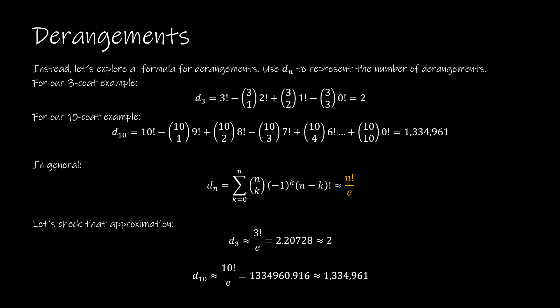So what we can do instead is explore a formula for derangements. We looked at D3, and derangement means nothing's in its right place or there's no pairing. So D3, we had three factorial, three choose one, two factorial, three choose two, one factorial, and so forth. And for D10, that's the one we just talked about, and we found our total of 1,334,961.